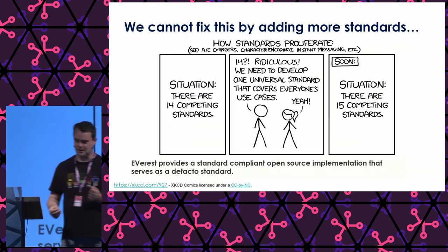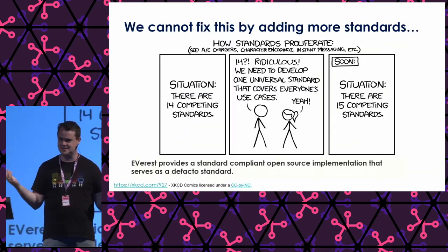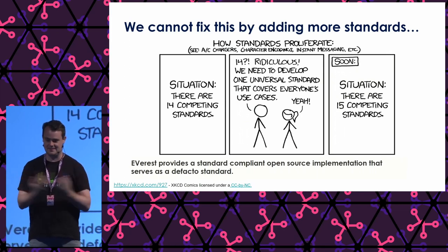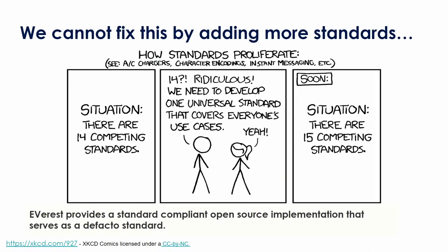So how can we fix that? We could invent a new standard, right? One standard that fits it all, but then we're ending up in a situation where we just added another standard to that nightmare — the other ones won't go away. So we think that won't work. We think you can do it by open source, basically implementing all the standards in one common library.